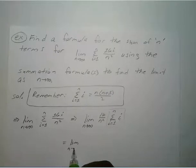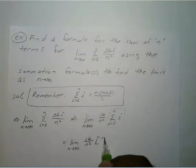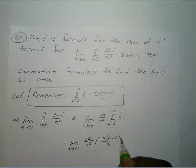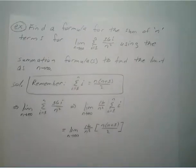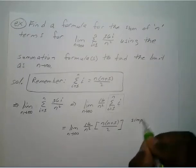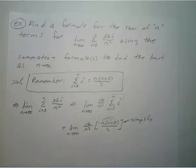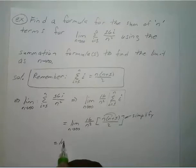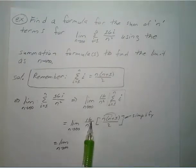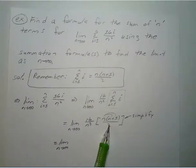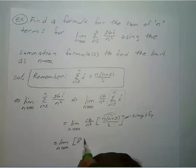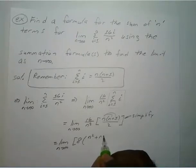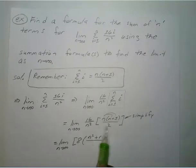So you have the limit as n approaches infinity of 16 over n squared times n times n plus 1 over 2. Now we simplify: 16 divided by 2 is 8, so we distribute that n to get 8 times n squared plus n over n squared.